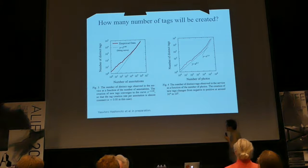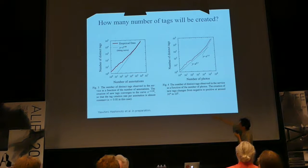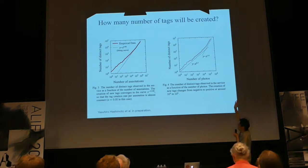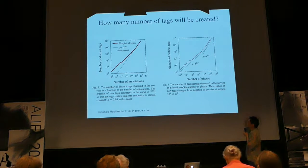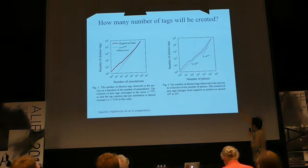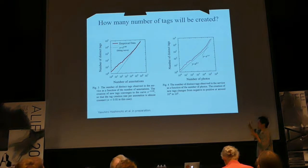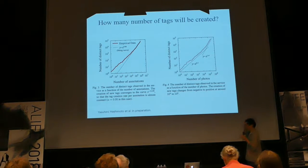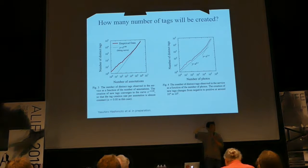First, we noticed something looking at the number of annotations and number of distinct tags — there are some transitions and it fits to a curve that is almost exponential with exponent equal to one. But looking at the number of photos and number of distinct tags, there is a transition around 10^4 to 10^5 photos. Maybe this is just an initial transient phenomenon, but you can also expect something happens before and after this tipping point.